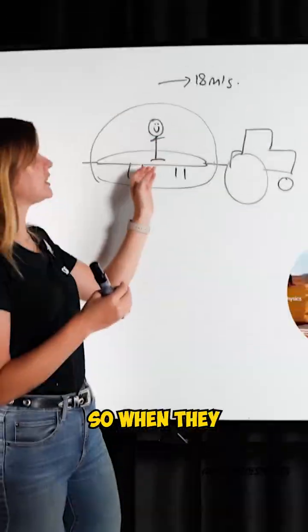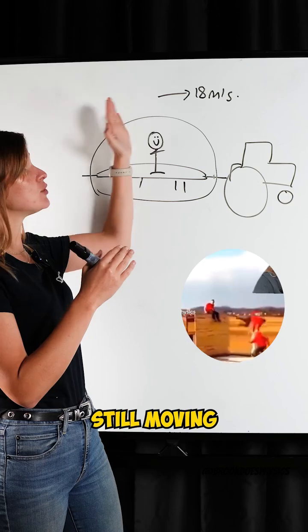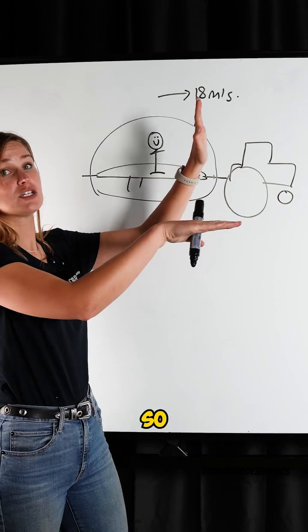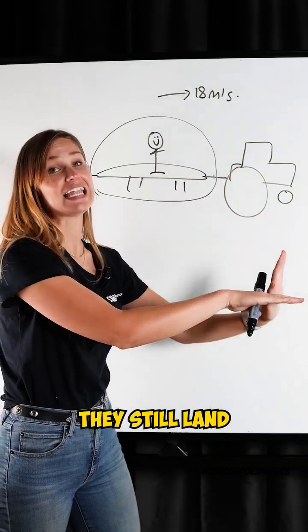So when they jump up, they are still moving forward at 18 meters per second. The tractor is still moving forward at 18 meters per second, so when they come back down, they still land on the trampoline.